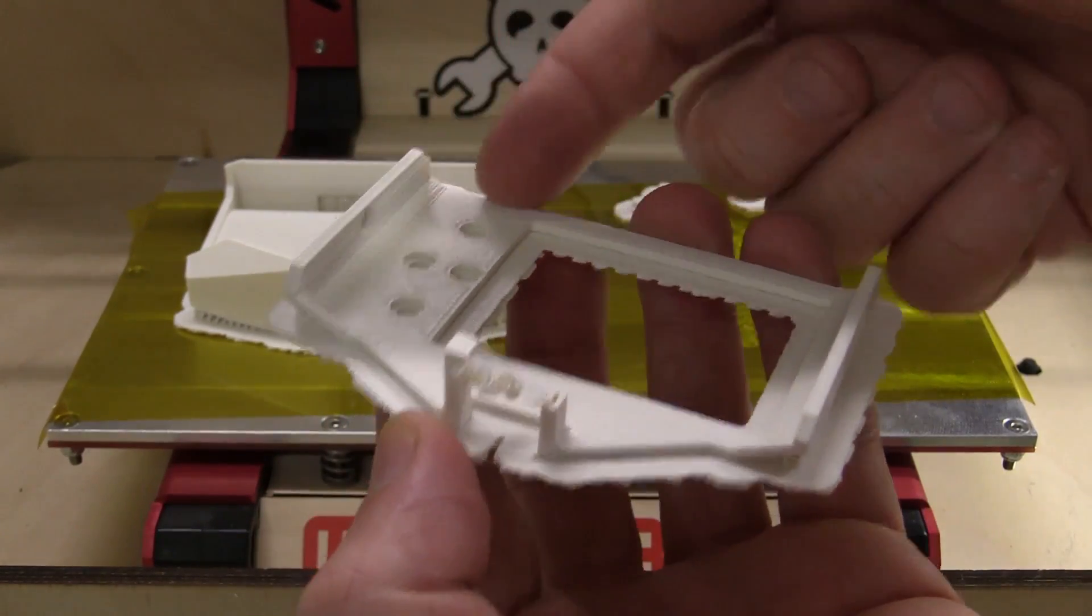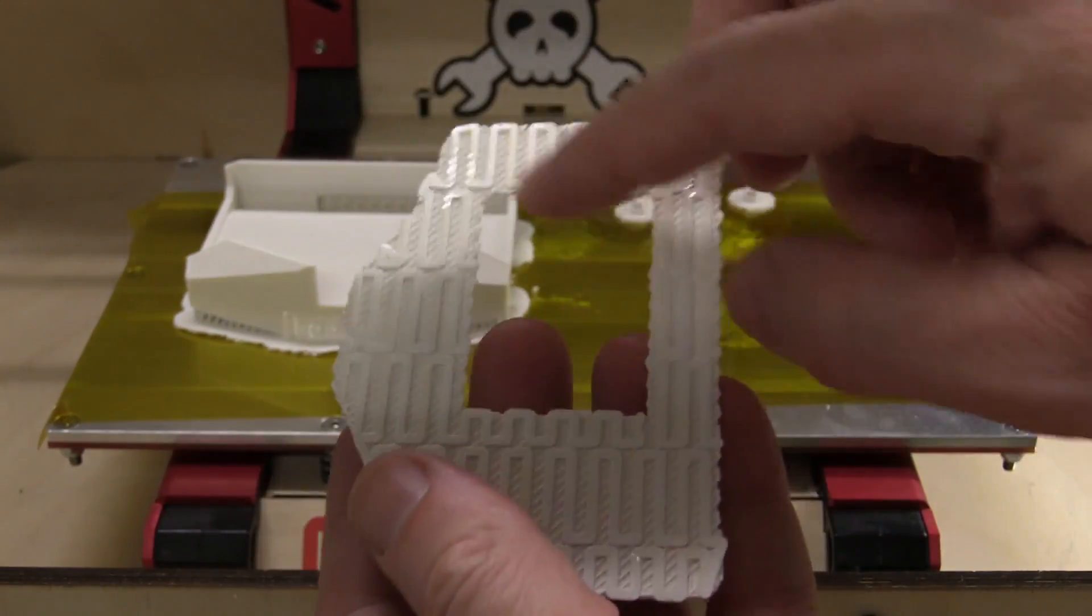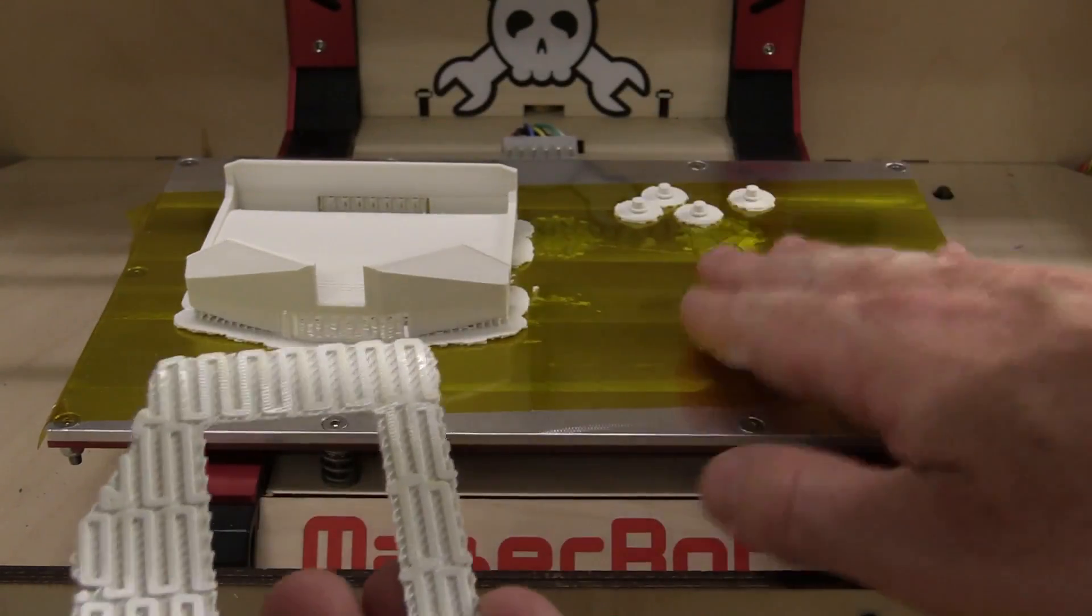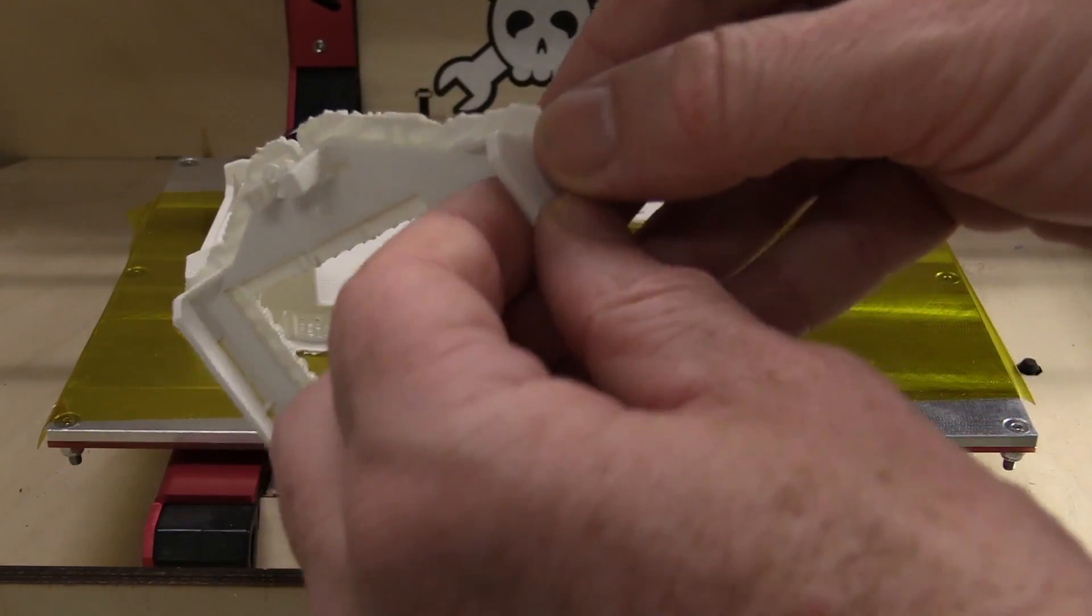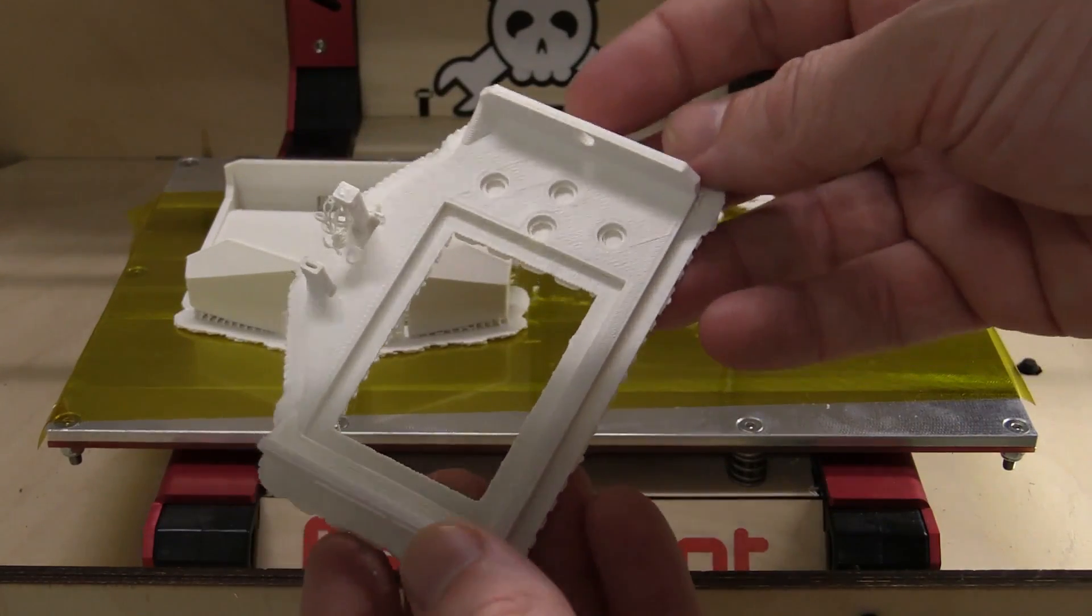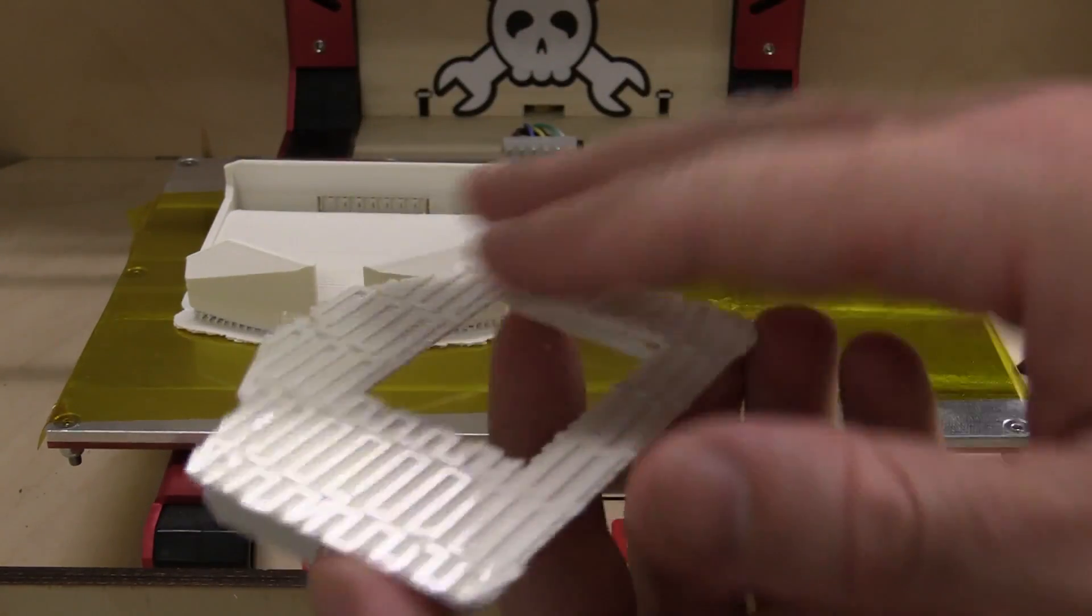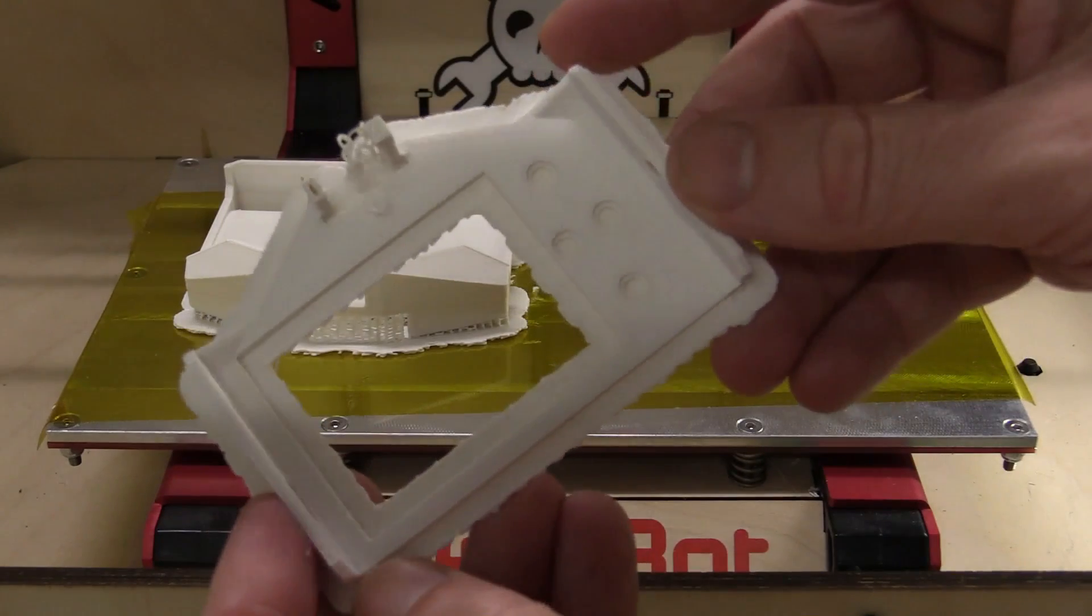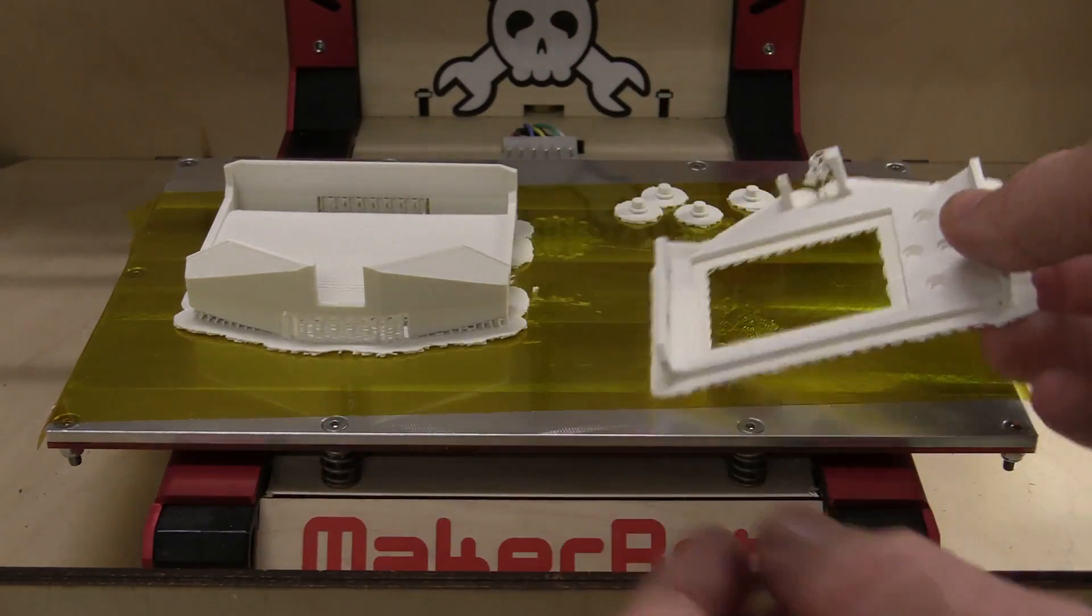But because this is going to be the top surface under here, it'd be better to try and either print that directly on there or print it up the other way so that we get a nice smooth finish on the outside. But anyway, that's our front cover plate.